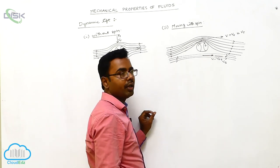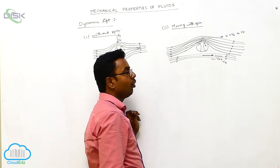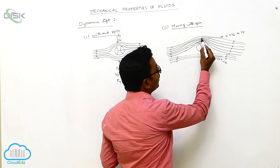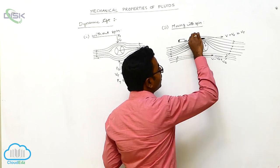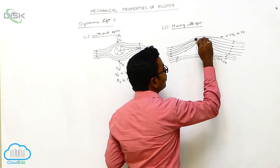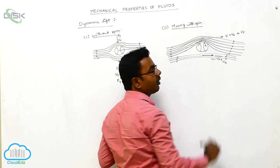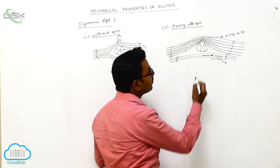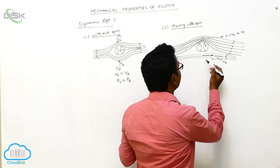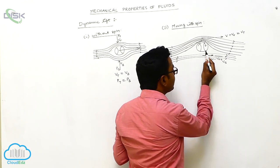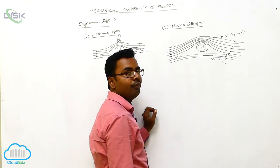Here, v is the velocity of air and vr is the velocity of rotation of the ball. Above the ball, the velocity of air and the velocity of rotation are in the same direction, so the resultant velocity above is v plus vr. Below the ball, the air flows in the same direction but the rotational velocity is in the opposite direction, so the resultant velocity below is v minus vr.